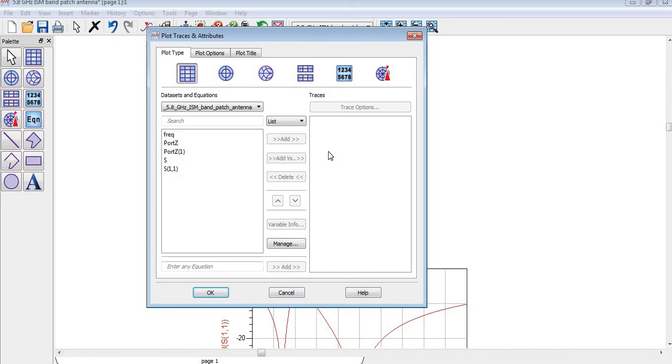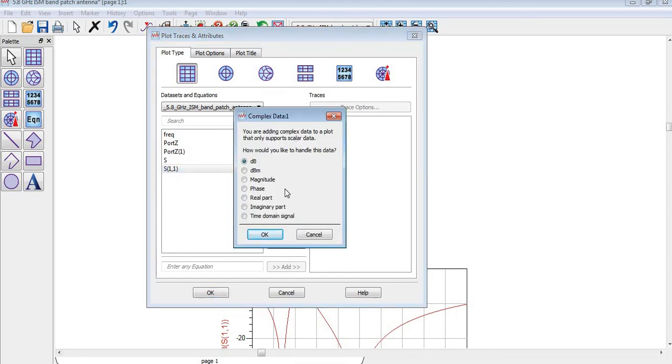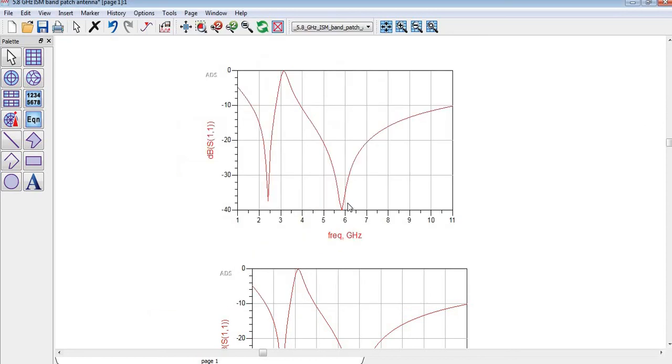By selecting S1, by pressing add, by clicking add and by pressing OK, you can see S parameter S1 is shown over here.